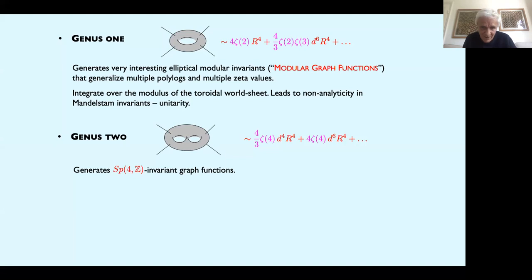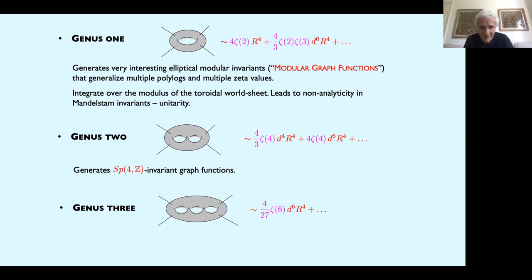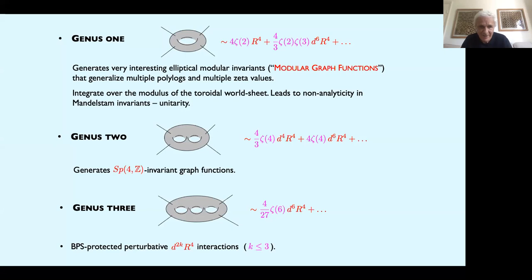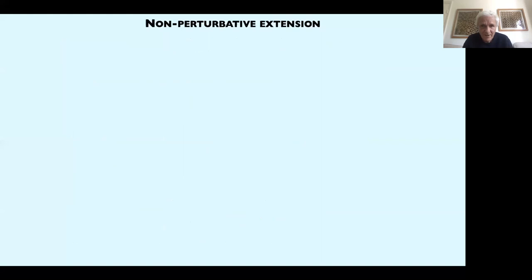At genus two it is more difficult still to write down the low energy expansion, but the first couple of terms are known. At genus three, virtually nothing is known apart from the leading term. I've written these down because they are the terms one wants to match when looking at holographically related Yang-Mills correlation functions. These terms are BPS protected: R to the fourth is half-BPS, D to the fourth R to the fourth is quarter-BPS, and D to the sixth R to the fourth is one-eighth BPS.